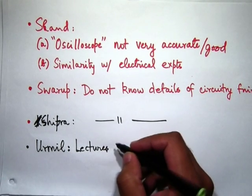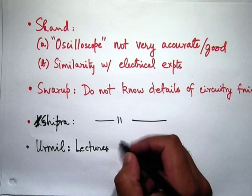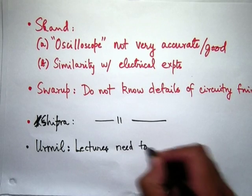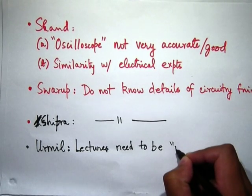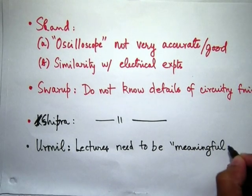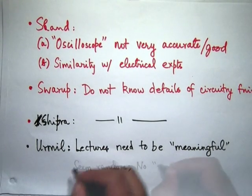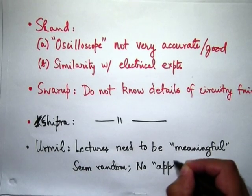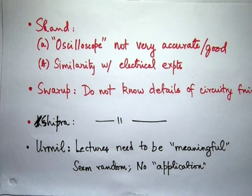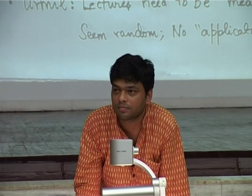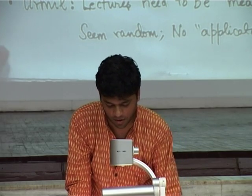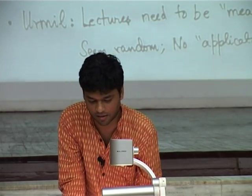Student Urmil: The lectures should be more meaningful with a clearer objective. We don't really need to attend the lectures to complete the lab assignments — we just go, follow instructions, and walk out. We don't go out saying we learned something; it's just that we sat through it. Nothing interesting, no application, and the lectures seem random.